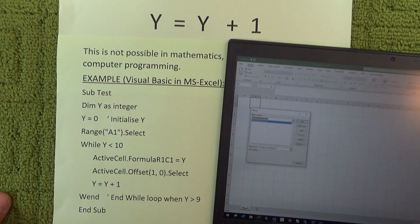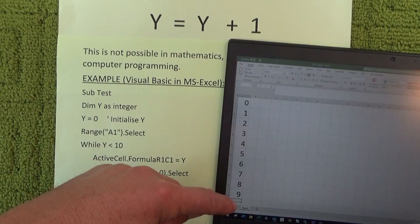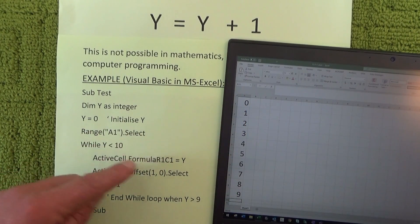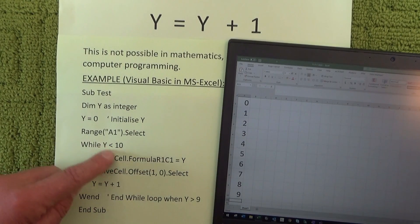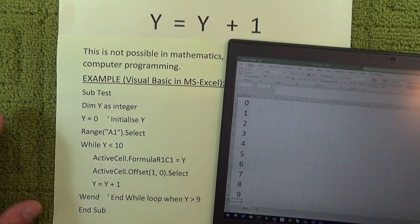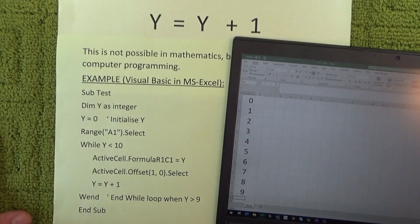So there we go, I run that, I run this bit of code in Excel and there we go there's the numbers from zero to nine down in that first column which is what this little simple little Visual Basic macro does.